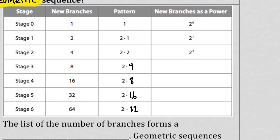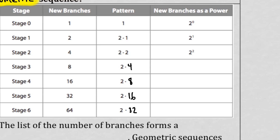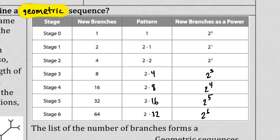We can also write all of those in terms of powers — each one is a power of 2. The one that maybe didn't seem obvious is that 1 is 2 to the 0 power, because anything to the 0 power is 1. So 16 is 2 to the 4th, 32 is 2 to the 5th, 64 is 2 to the 6th. You might also notice that the stage number matches the exponent — stage 6 is 2 to the 6th. So if you want to find how many new branches in stage 20, just compute 2 to the 20th power.